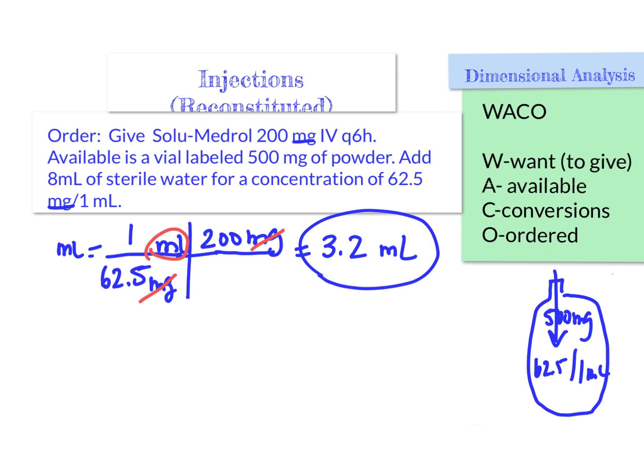Remember what we're doing: we have a 500 milligram vial, we add 8 mL of sterile water per instructions for a final concentration of 62.5 milligrams per 1 mL. We give 3.2 mL of it, and the other approximately 5 mL we waste — it goes in the garbage, unless it's a controlled substance and gets wasted in the Pyxis. That is how we do reconstituted medications.